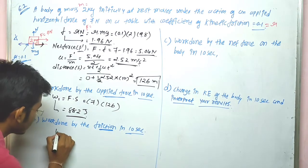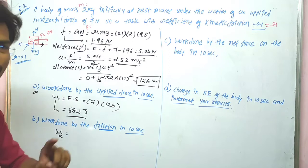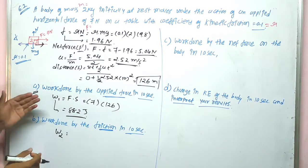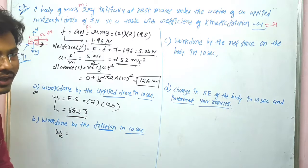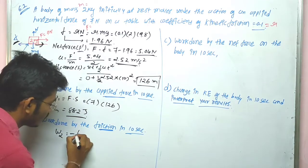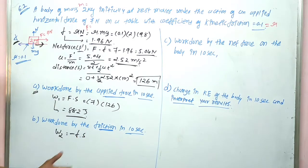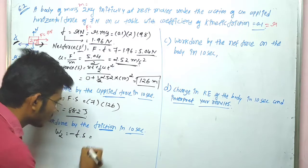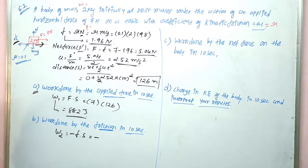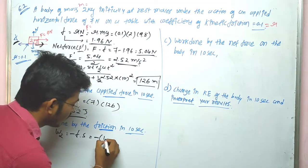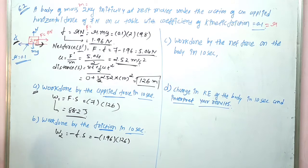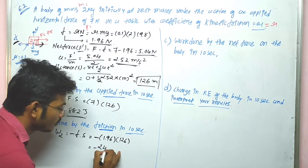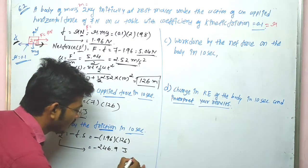Work done by the frictional force in 10 seconds: W2. Since friction and displacement are in opposite directions, work done is negative. W2 = -f × s = -1.96 × 126 = -246.9 J.